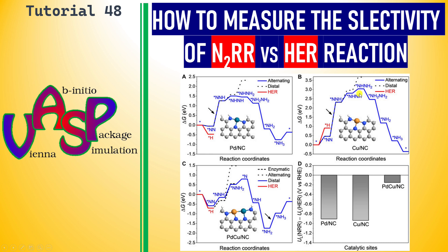These are the calculated energy profiles for the dinitrogen reduction reactions along with the hydrogen evolution reaction. The red colored one is HER, the blue colored one is the nitrogen reduction reaction. This is the Pd single atom catalyst, this is the copper single atom catalyst, and this is the Pd-Cu dual atom catalyst. This is the selectivity profile for NRR vs HER.